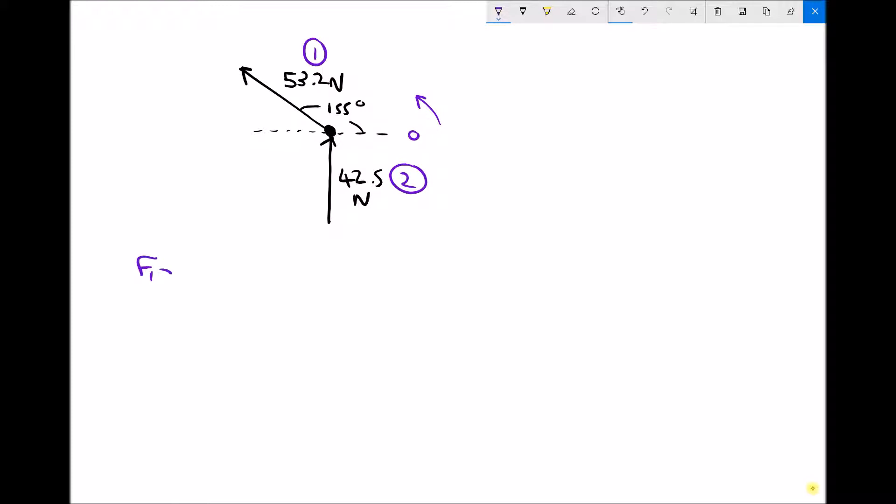So first of all, we've got F1X. Now the X component of this force, if we turn this into a triangle, the X component is going to be the line at the bottom there, and the Y component of the 53.2 Newton force is going to be the second line on that triangle. But let's just note the directions. The X component goes right to left, so it's negative. The Y component goes bottom to top, so the Y component's positive.